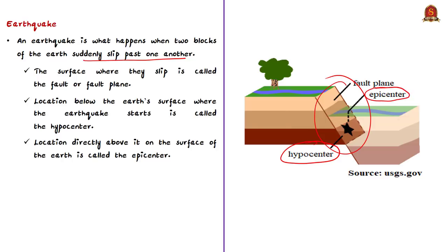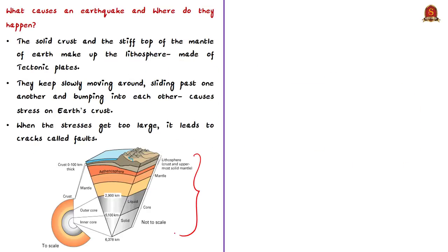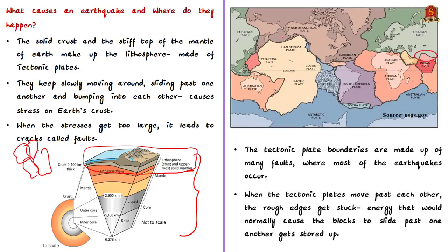What causes an earthquake and where do they happen? The earth has four major layers: inner core, outer core, mantle, and crust. The solid crust and stiff top of the mantle make up the lithosphere. The lithosphere is not a continuous piece — it is made of many pieces called tectonic plates, which you can visualize like a puzzle. These tectonic plates keep slowly moving, sliding past one another and bumping into each other. This non-stop movement causes a lot of stress on the earth's crust. When these stresses get too large, it leads to cracks called faults. Most earthquakes around the world occur along these faults at plate boundaries.